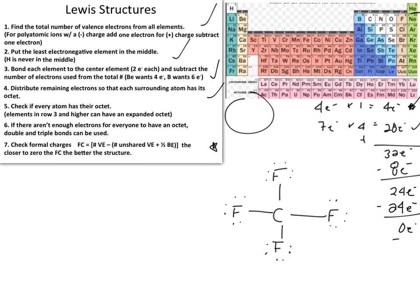We have no more electrons to distribute, so we check if everyone is satisfied. Looking at the carbon atom: it is bonded to four fluorines, and each bond has two electrons. Two times four gives a total of eight electrons surrounding carbon.